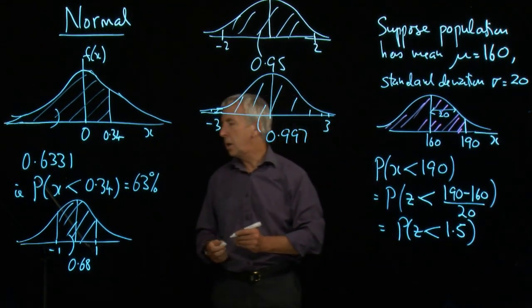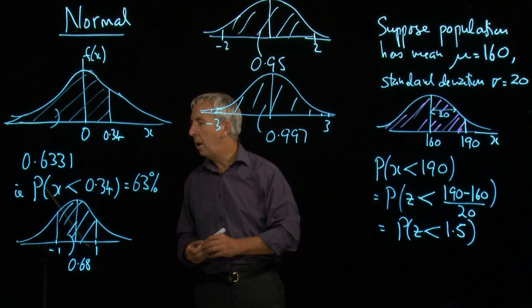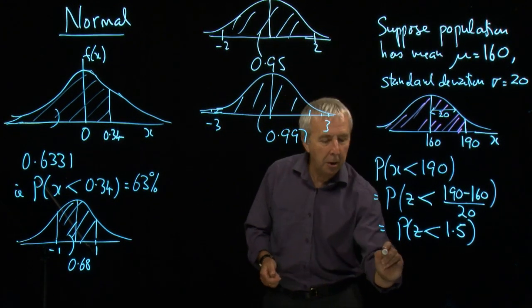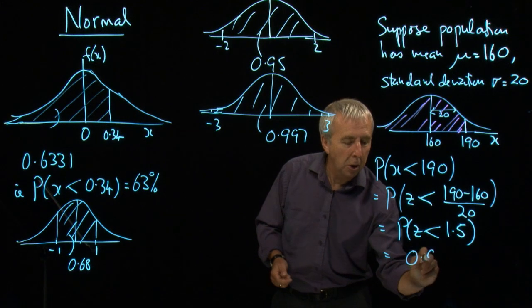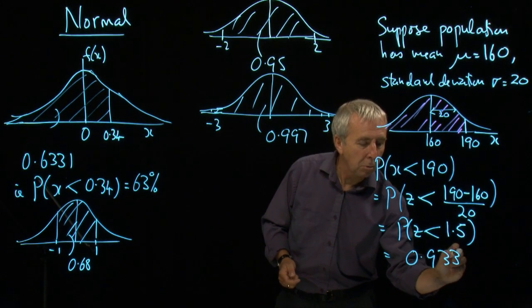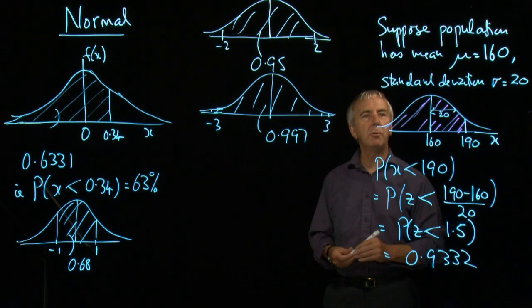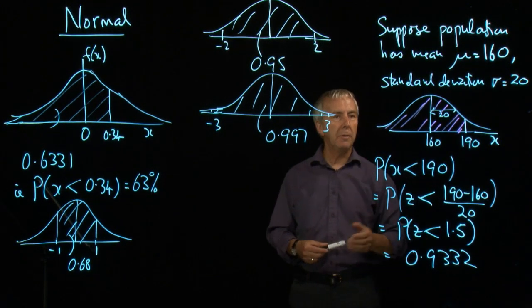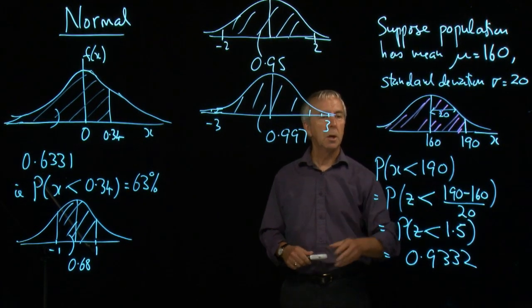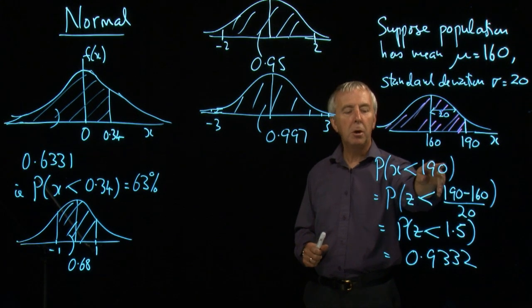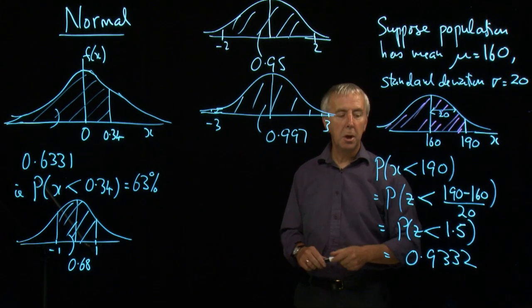z less than or equal to 1.5 and that comes out to be 0.9332. So for that particular distribution, with a mean of 160, standard deviation of 20, the chance of being less than 190 is 0.9332.